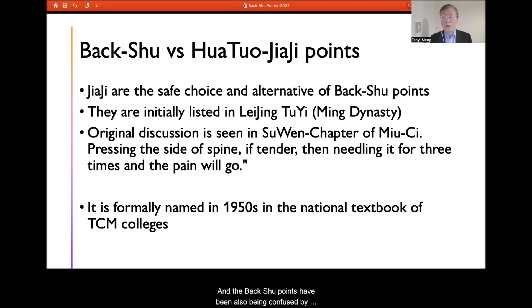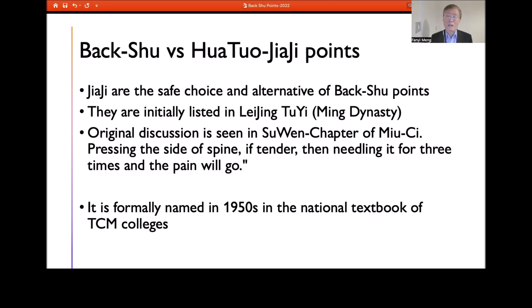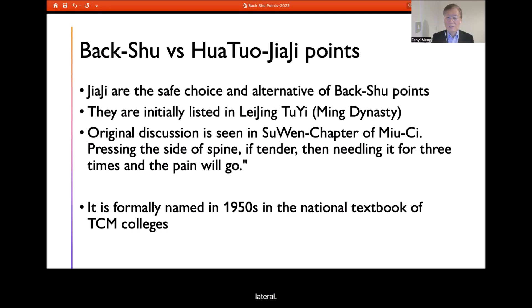The back Shu points have also been confused with Jiaji by many practitioners, because the Internal Classic mentions Jiaji without providing many details. Jiaji looks very similar to the back Shu point. However, in the Ming Dynasty this was finalized, and Jiaji points were clearly defined as points lined up on the side of the spine, half-cun to one-cun lateral. This was formally recognized in 1950 and written into the national textbook.